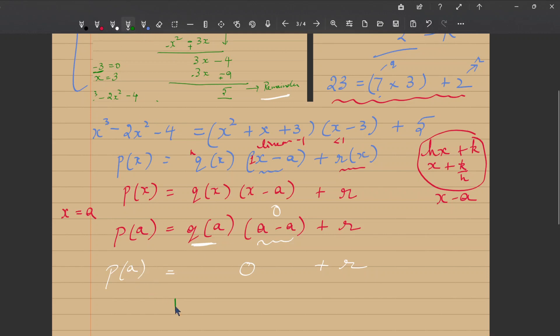Which gives you the conclusion that P of a is equal to r. And this is our remainder theorem. This is what our remainder theorem says: that polynomial, if when divided by the linear polynomial x minus a, the remainder is equal to the value of this polynomial at a. This is what our remainder theorem says. I hope you understood.